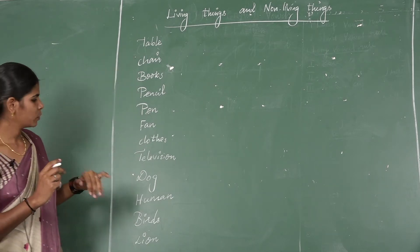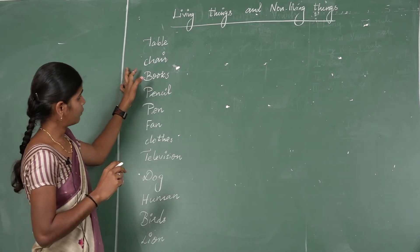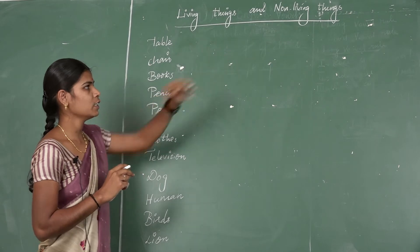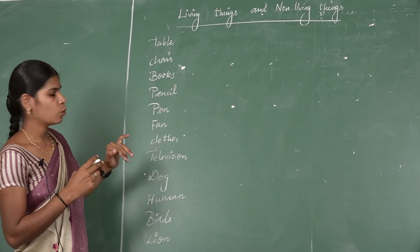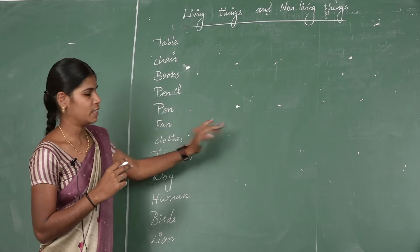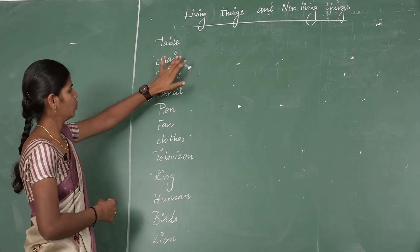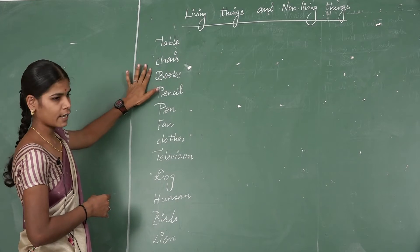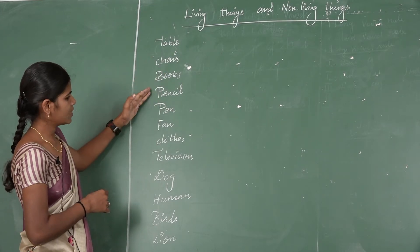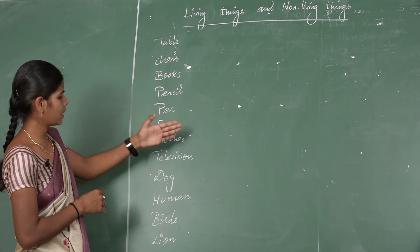So now we can define all these things by two categories: living things and non-living things. See which ones can move from one place to another. Table cannot move. Chair cannot move. Books cannot move. Pencil cannot move. Pen cannot move.